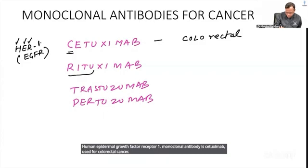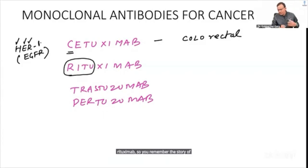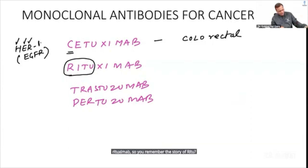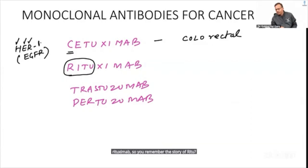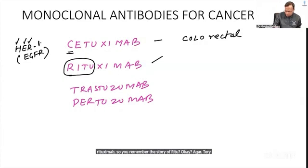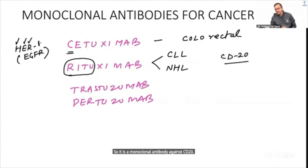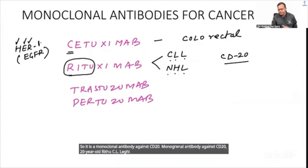Rituximab is a monoclonal antibody against CD20, used for lymphoid malignancies. Remember: Ritu = 20-year-old = CD20.